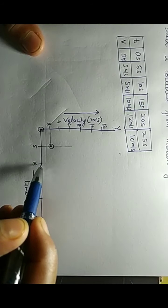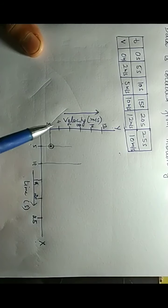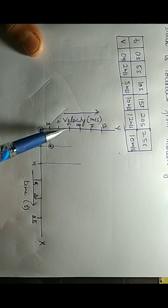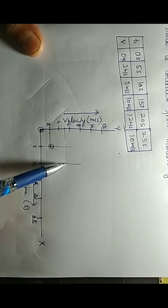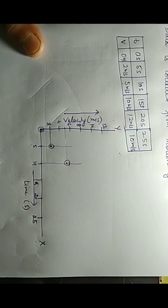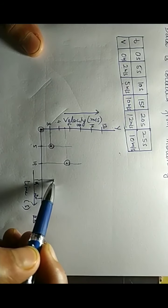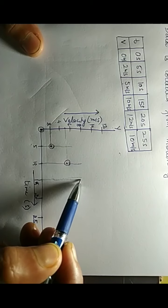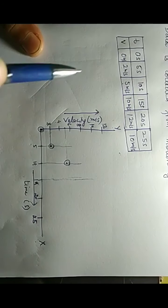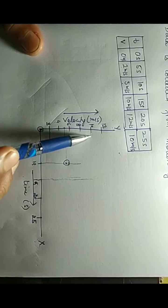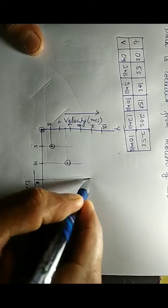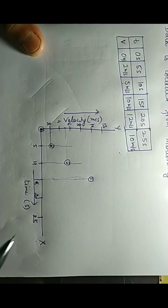At 10 seconds, the velocity is 5 meters per second. From 10 seconds I draw a vertical line; since 5 is midway between 4 and 6, I mark that as our third point. At 15 seconds, the velocity is 10 meters per second — I draw a vertical line from 15 and a horizontal line from 10, giving our fourth point. At 20 seconds, the velocity is 12 meters per second.